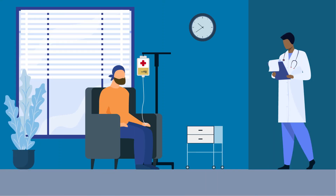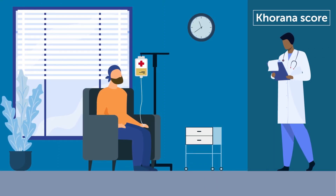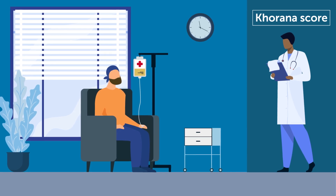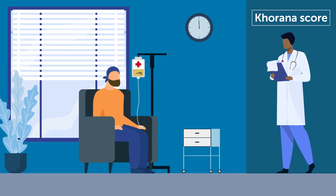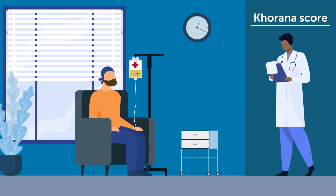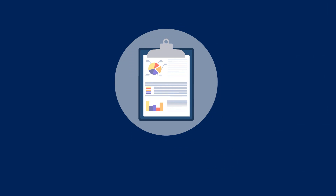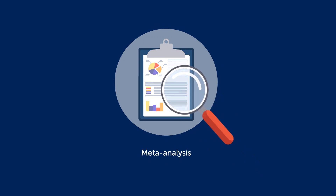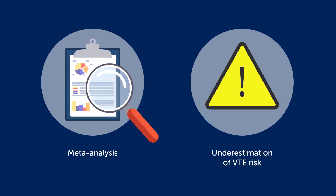The KHORANA score is the most widely used tool to predict incident VTE in patients receiving chemotherapy. However, recent meta-analyses reveal that the score could underestimate the risk of VTE by a large margin depending on the cutoff.